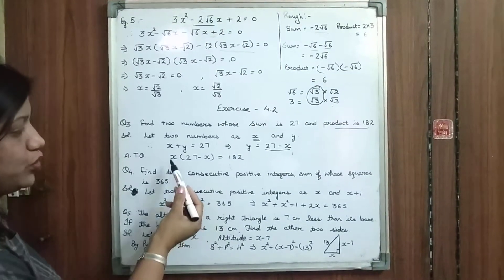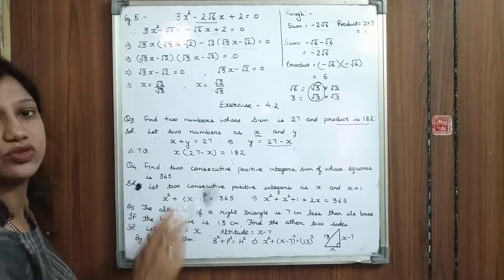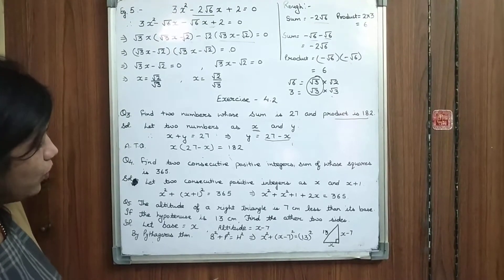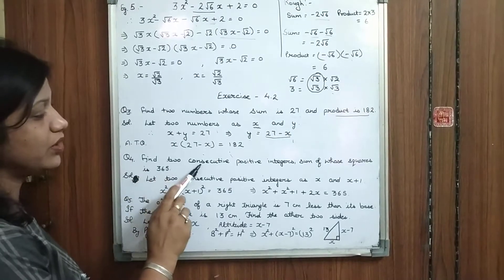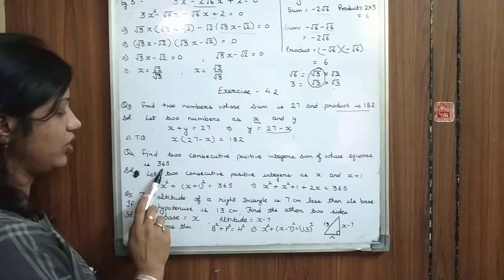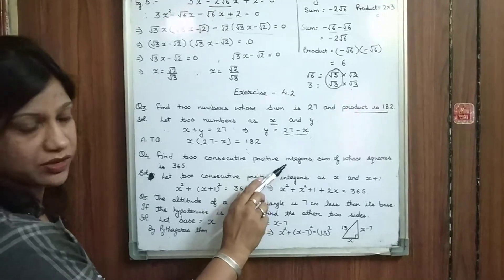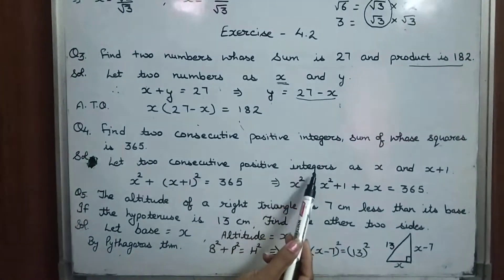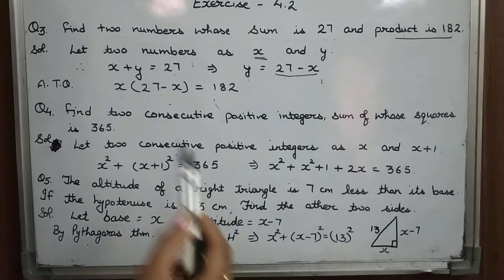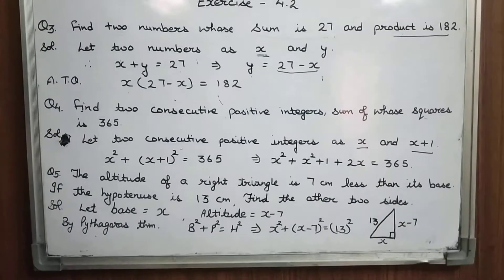We know very well how to multiply the terms and how to solve by factorization method, so you need to solve it completely. Now let's take Question 4: Find two consecutive positive integers whose sum of squares is 365. Two consecutive positive integers means both are positive and one after the other, so we will consider two integers as x and x plus 1.